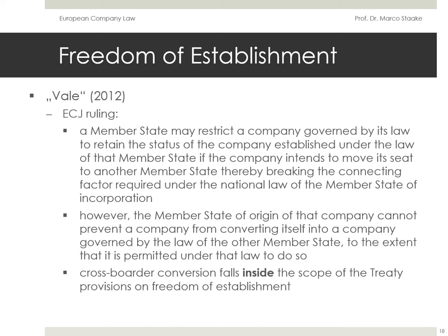The ECJ ruled that a member state may restrict a company governed by its law to retain the status of a company established under the law of that member state. However, the member state of origin cannot prevent a company from converting itself into a company governed by the law of another member state, to the extent that it is permitted under that law to do so. This means that cross-border conversions fall within the scope of the treaty provisions on freedom of establishment. The main point concerned Hungarian law and its restrictions on incoming companies: if the law of the member state to which a company moves only provides for the conversion of domestic companies, it treats companies from other member states worse. This can deter companies from moving their operations to other member states and impede their freedom of establishment. Because of that, the restriction imposed by Hungarian law was unjustified and ineffectual due to the supremacy of European law.